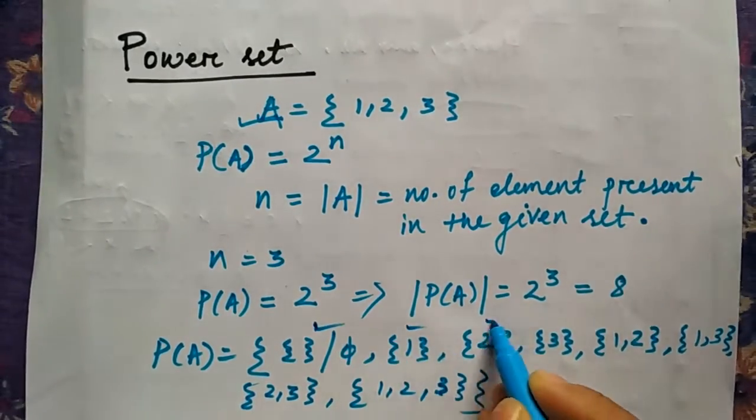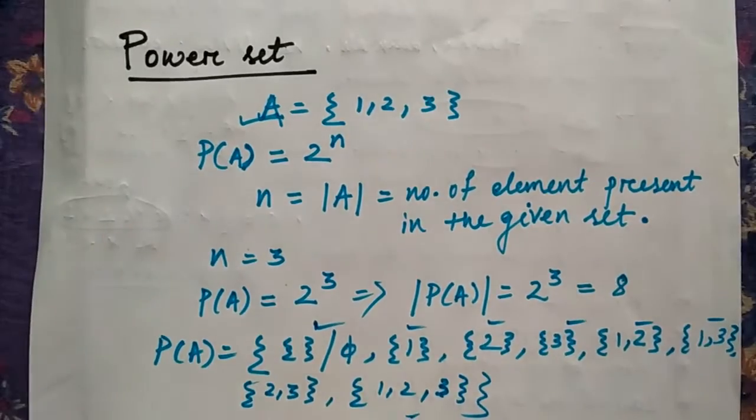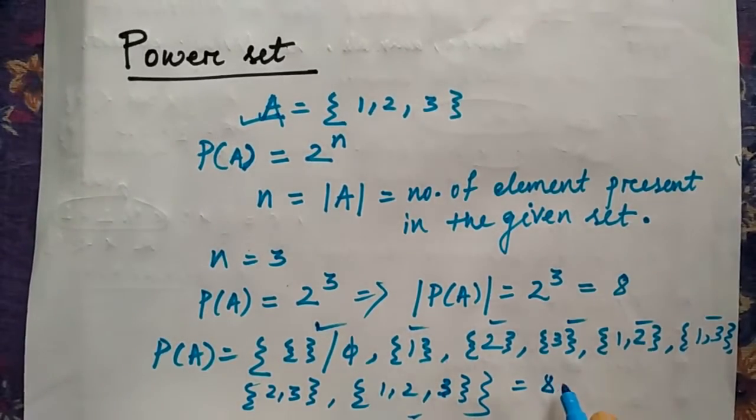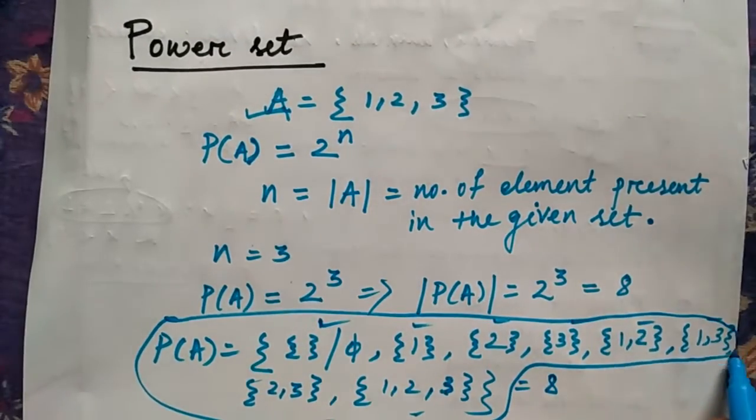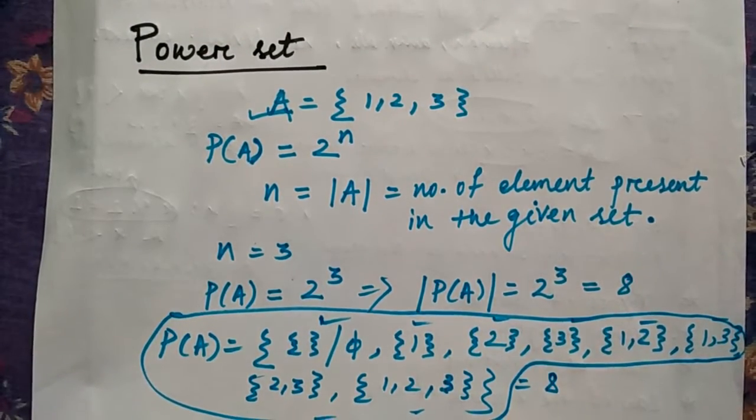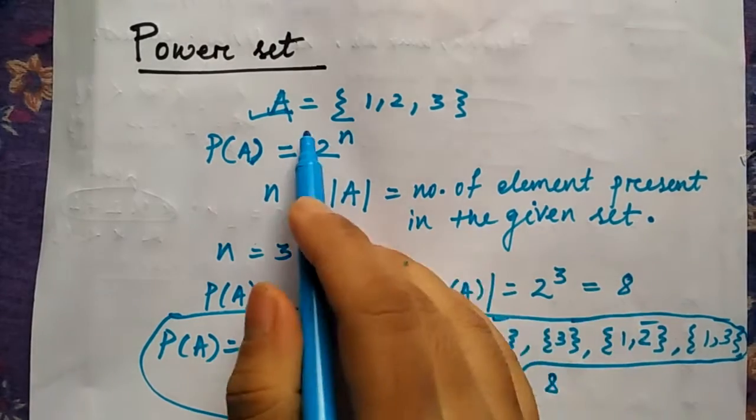{1, 2} together, {1, 3} together, then {2, 3}, then {1, 2, 3}. So how many sets are there? 1, 2, 3, 4, 5, 6, 7, 8. You got total 8 elements. This particular thing is called as power set of A.